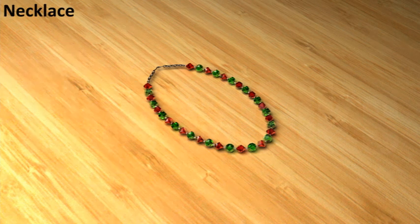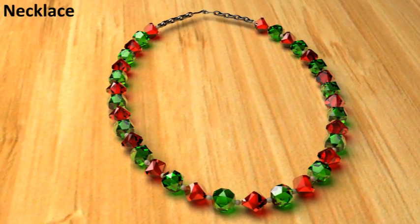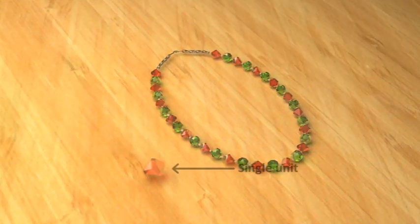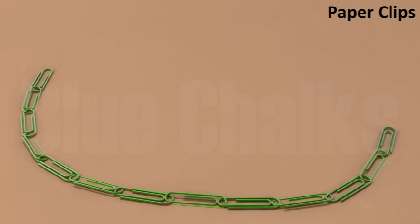Have you ever seen a beaded necklace? In this necklace, many beads are threaded together. So the single unit in the necklace is one bead. Now try to join a number of paper clips together to make a long chain. The single unit of this chain is a paper clip.